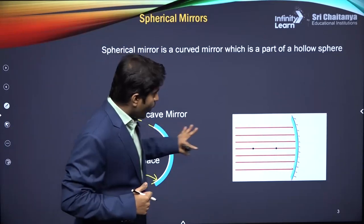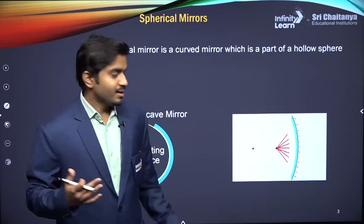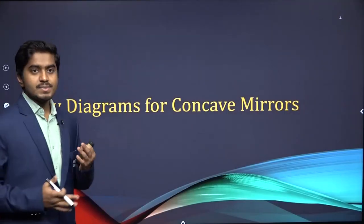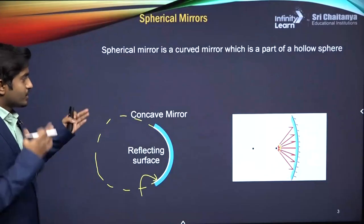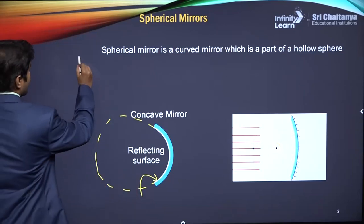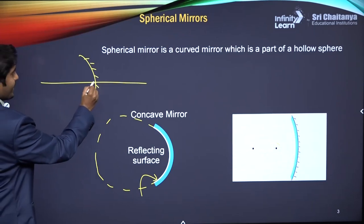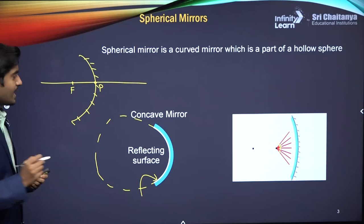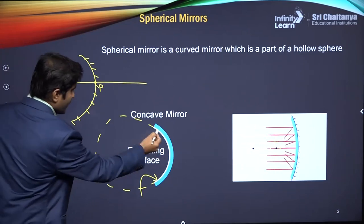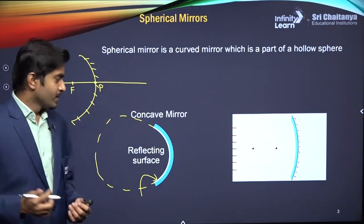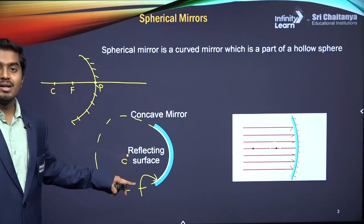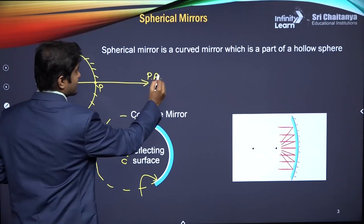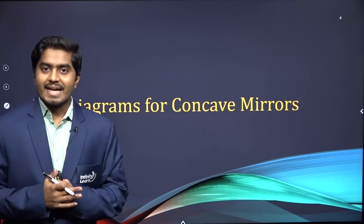When all rays parallel to the principal axis fall onto the mirror, they all converge at a single point called the principal focus. There are a few terms you should remember: the point on the mirror is called the pole; the point where all rays converge is the focus; and C is the center of curvature — the center of the sphere that the mirror is part of. The line through these points is called the principal axis.